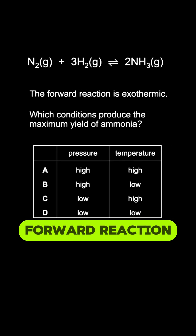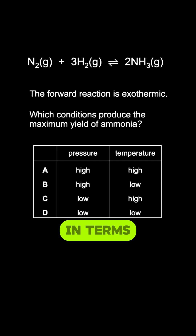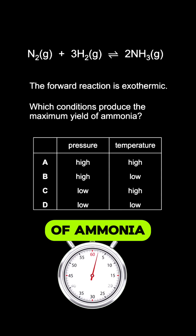If the forward reaction is exothermic, which condition in terms of pressure and temperature will increase the yield of ammonia?